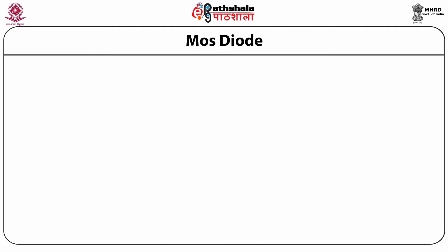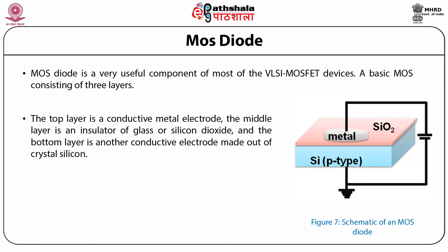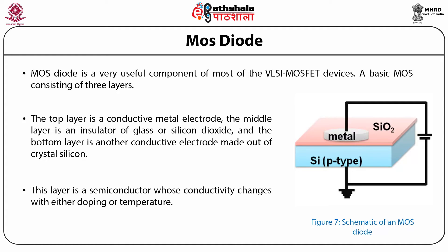Metal Oxide Semiconductor — MOS diode. MOS diode is a very useful component of most VLSI MOSFET devices. A basic MOS consists of three layers: the top layer is a conductive metal electrode, the middle layer is an insulator of glass or silicon oxide, and the bottom layer is another conductive electrode made out of crystal silicon. This bottom layer is a semiconductor whose conductivity changes with either the doping or the temperature. The schematic of the MOS diode is clearly shown in this figure.